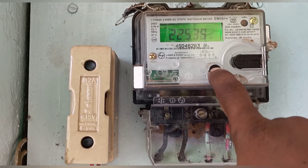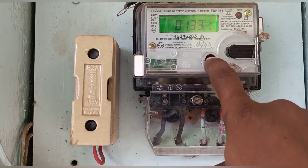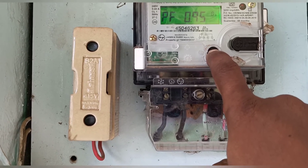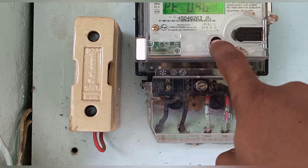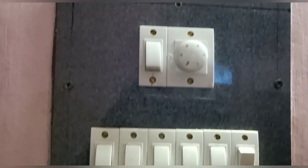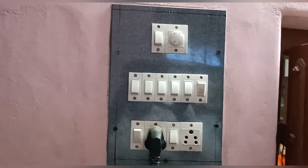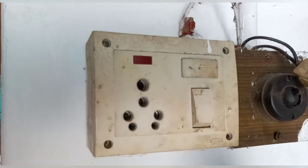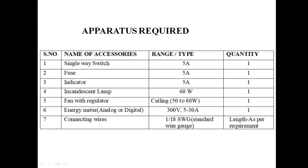Now we are entering into our home. This is an MCB — nowadays the conventional mains are replaced by MCB. The board consists of a plug point, switches, regulator, and an indicator fuse.